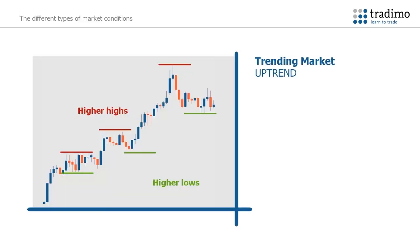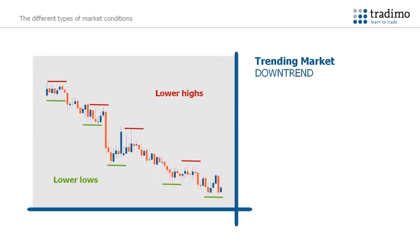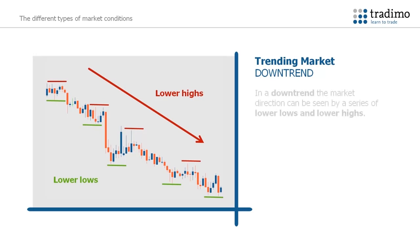A trending market is a market that moves clearly in one direction, up or down. Here is an example of an uptrend. In an uptrend, the market direction can be seen with a series of higher highs and higher lows. And here is an example of a downtrend. In a downtrend, the market direction can be seen with a series of lower lows and lower highs.